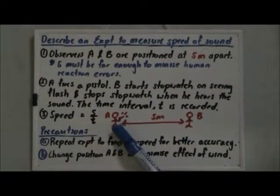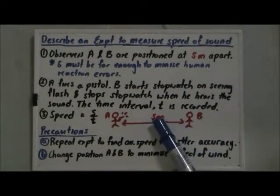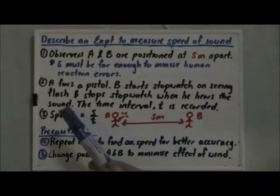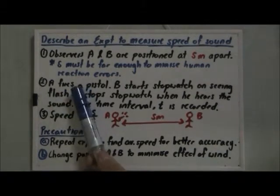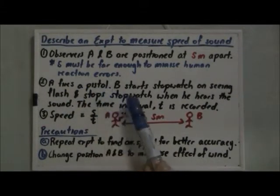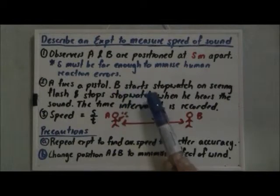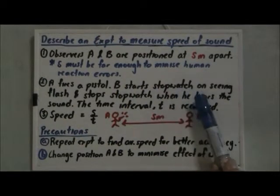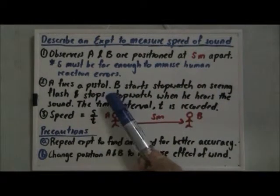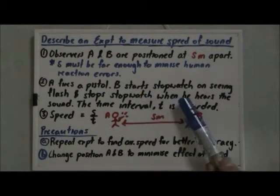A diagram is shown here, A and B positioned at S meter apart. So observer A will fire off a pistol.